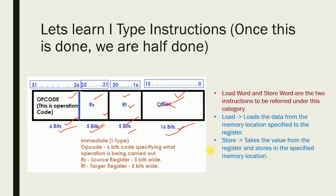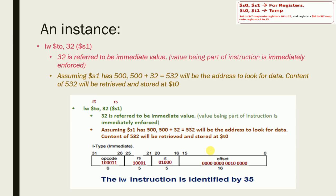I-type instructions handle load and store operations. Load moves content from a memory location into a register. Store does the opposite — it moves content from a register to a memory location. Load is to a register; store is to memory. Example: 'lw $t0, 32($s1)' — load word will load content from a memory location into register t0.